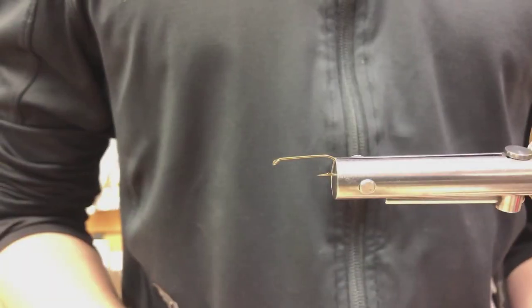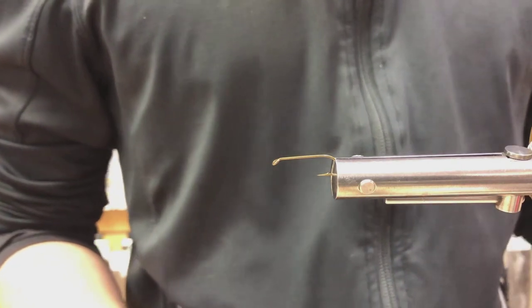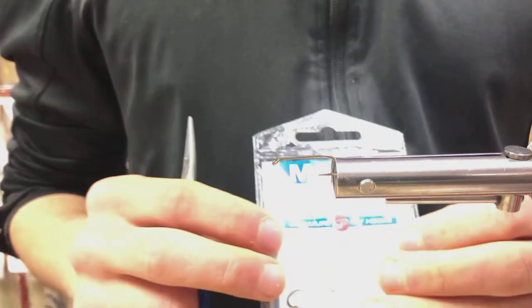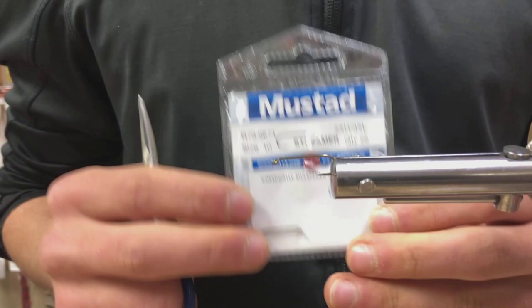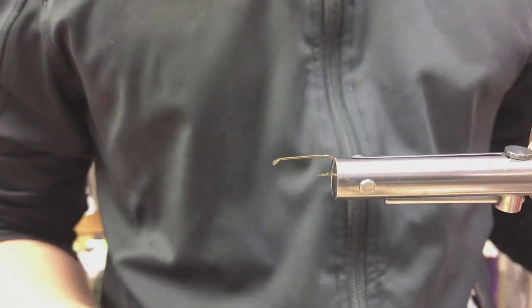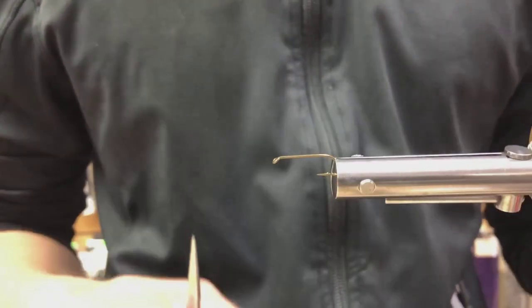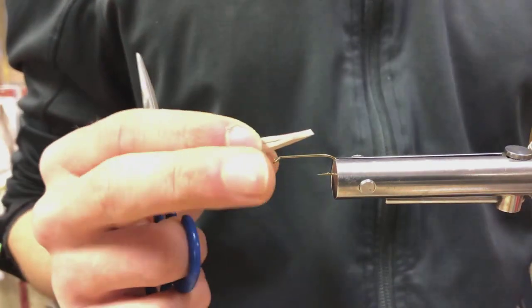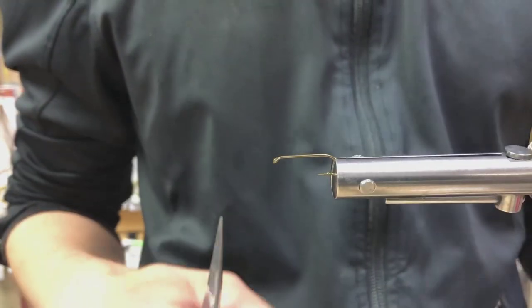All right, now that we have the body cut out, we can start tying. The hook that I have in the vise here is a Mustad R73 streamer hook, size 10. It's a nice heavy wire long shank hook. You can get away with using a pretty heavy wire hook for these foam flies.